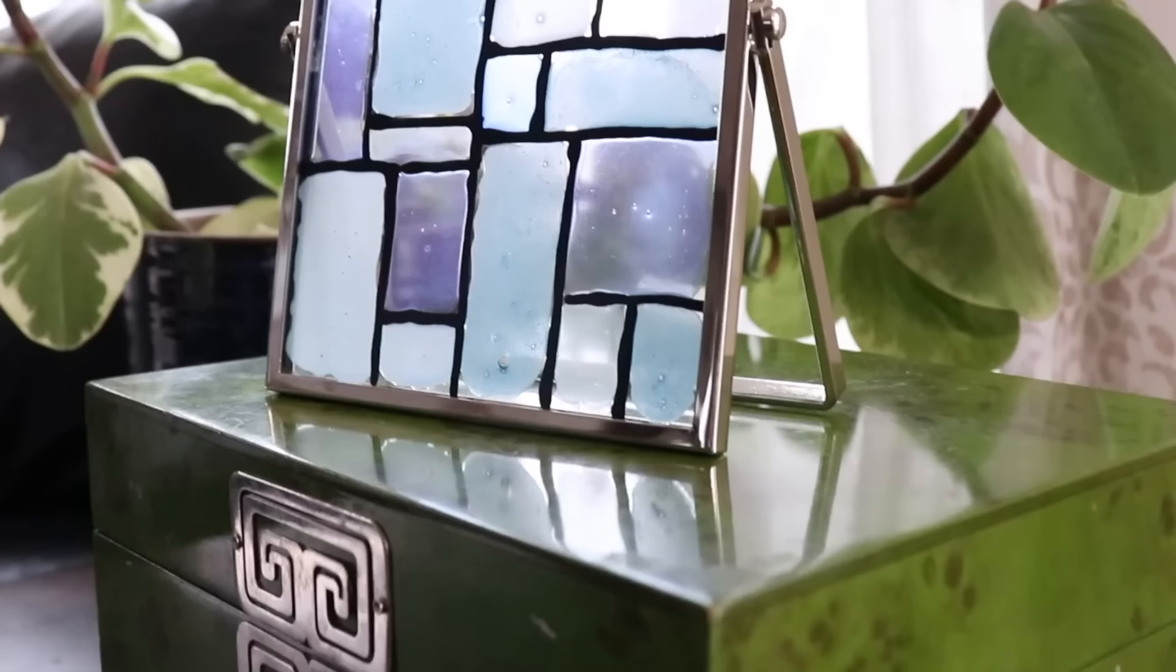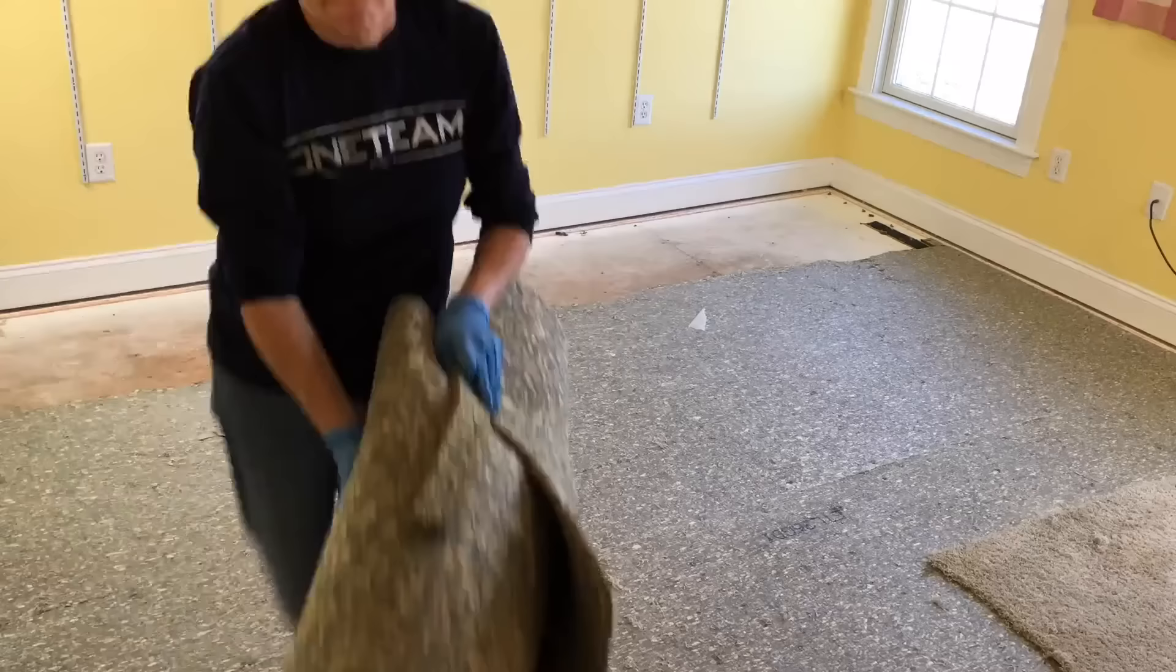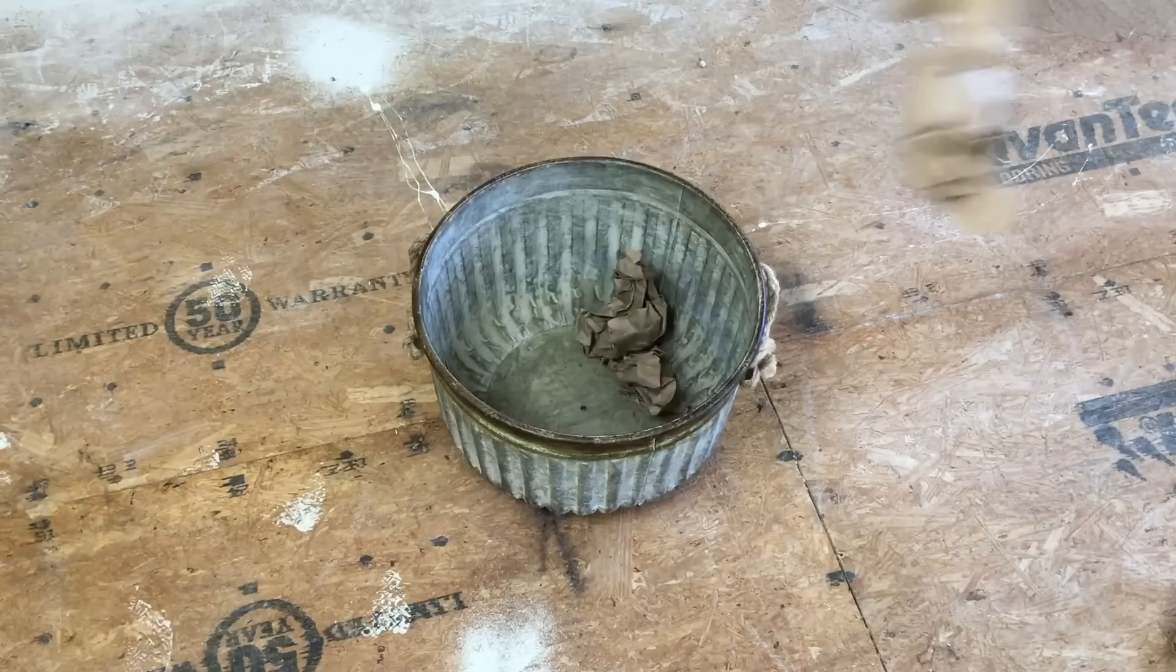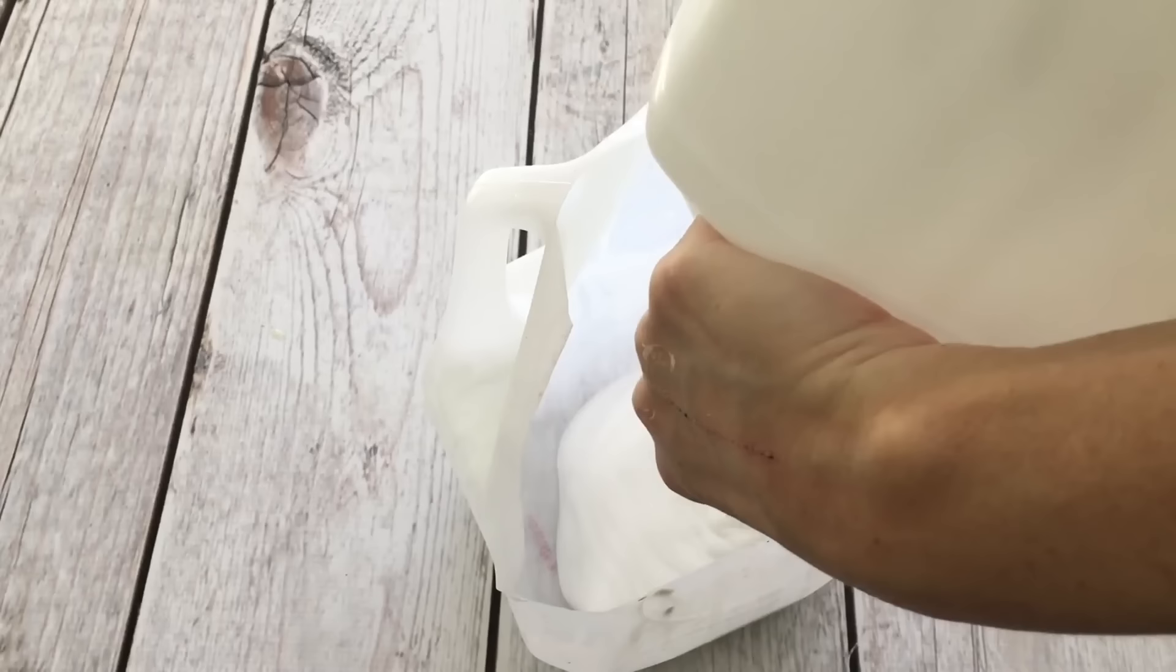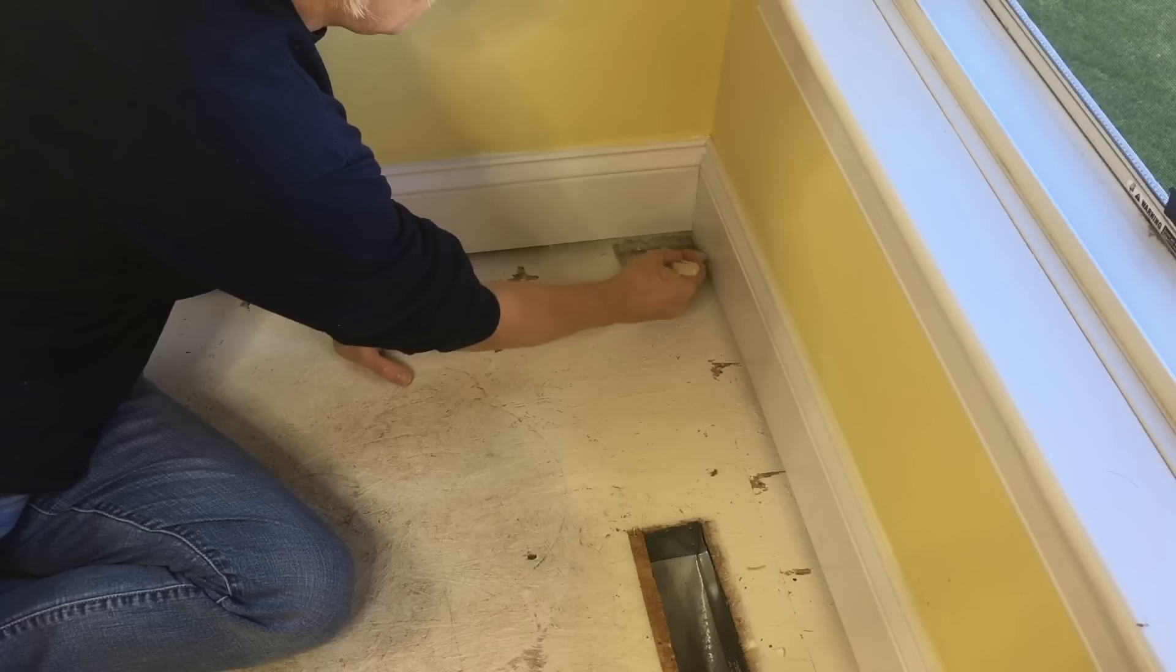The carpet in my office needed to be replaced, but it just wasn't in the budget. But torn and crumpled paper was. Mixing equal parts of glue and water, I made the paste for the floor. Using a wide paint brush, I applied the glue to the floor, making sure I got underneath the baseboards.